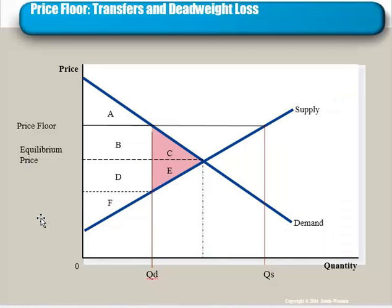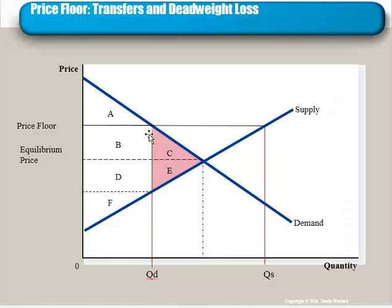As with our earlier price ceiling example, we can draw a picture. Before the price floor was established, consumer surplus was A plus B plus C — everything above the price and below the demand curve. Producer surplus was D plus E plus F — everything below the price and above the supply curve. Now that we have the price floor, the actual number of transactions is the lesser of quantity demanded and quantity supplied. So consumer surplus is region A, and producer surplus is everything below the price and above the supply curve, but only up to this quantity because these transactions out here don't happen.